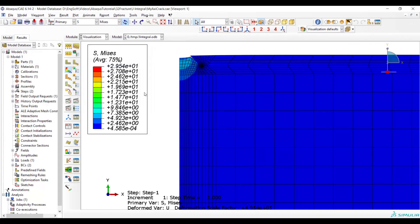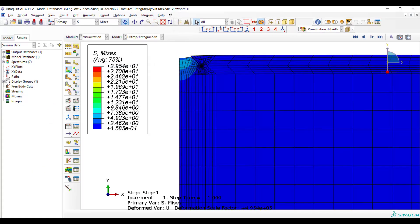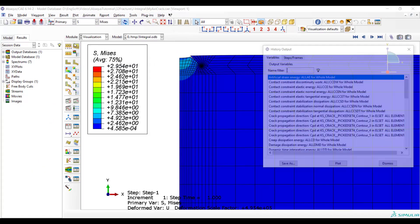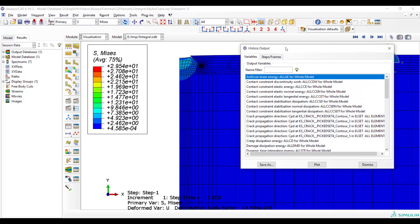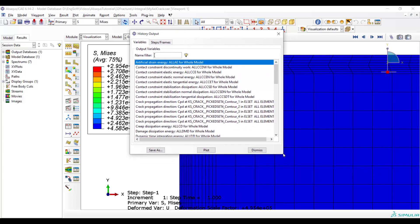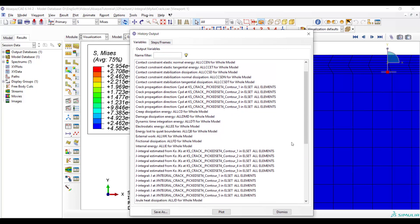We can go to the visualization module and plot history outputs which contains different integrals. Also it includes crack propagation direction.